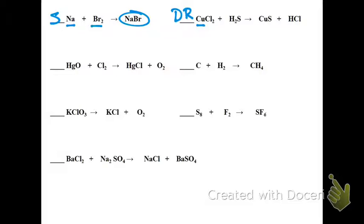In our next example of an equation, we have mercury and oxygen in a compound, plus chlorine as a single element, becoming mercury chloride plus oxygen. So this is a single replacement. Carbon plus hydrogen, yielding CH4, is synthesis. We start with two separate elements, and they become one combined.